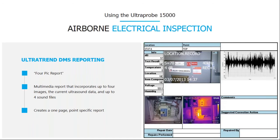For the electrical application, one of the reports I like best is the Four-Pic report — a multimedia report that incorporates up to four images, the current ultrasound data, and up to four sound files. You can incorporate an infrared image, an image from the Ultra Probe 15,000 which overlays all your information (machine name, point name, decibel level, date, time, etc.), and a digital image from a FLIR camera. You can import images from any source into Ultra Trend DMS to create application-specific reports. The Four-Pic report is available for both the electrical application and the bearing application.